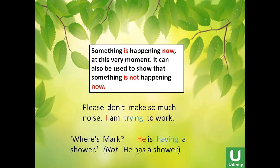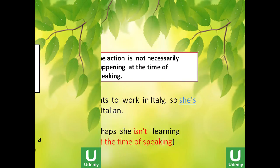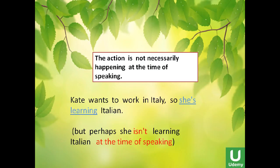We use the present continuous to talk about something that is happening now, at this very moment. It can also be used to show that something is not happening now — for example: 'Please don't make so much noise, I'm trying to work.' So he's trying to work right now. Another example: 'Where's Mark?' 'He's having a shower' — not 'he has a shower.'